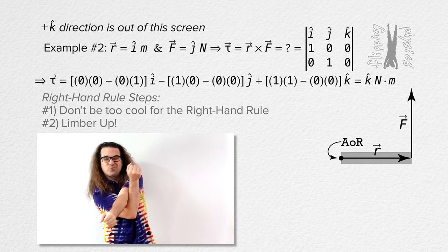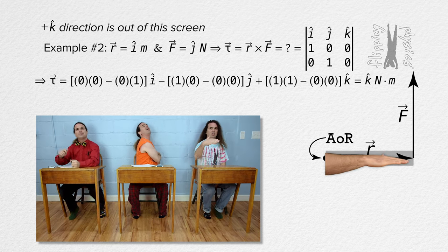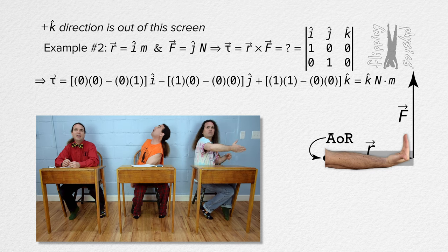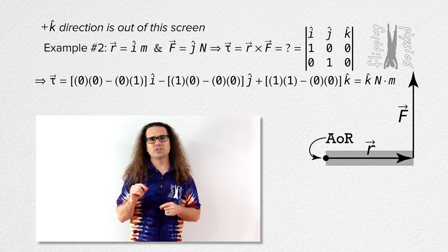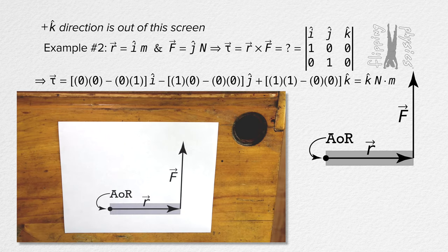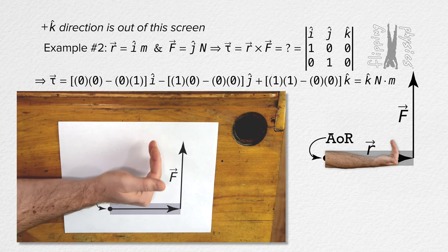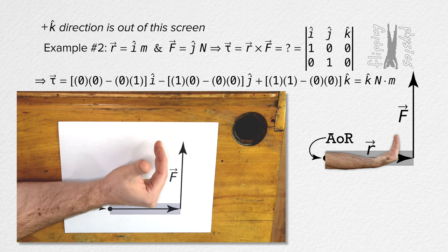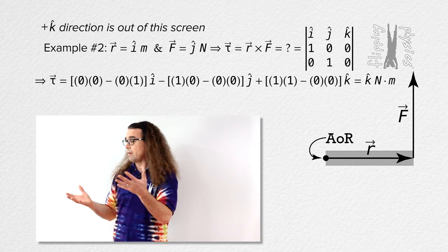Bo, please use the right-hand rule for this example. Starting with my right hand at the axis of rotation, I point my fingers along the position vector towards the force, curl my fingers 90 degrees in the direction of the force, and my thumb points out of the screen, which is positive. If you do this with your paper flat on your desk, the fingers of your right hand point to the right in the direction of the r position vector, your fingers curl 90 degrees in the direction of the force, and your thumb points up or out of the page. Up is positive, therefore out of the screen is also positive, and up is the positive k direction.